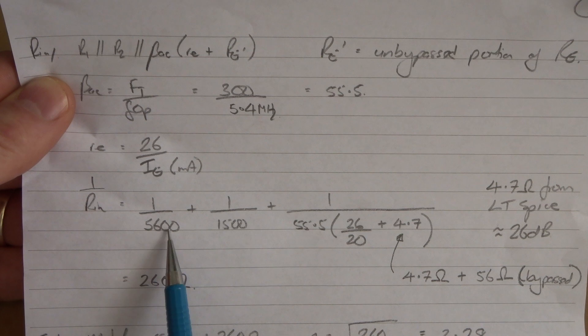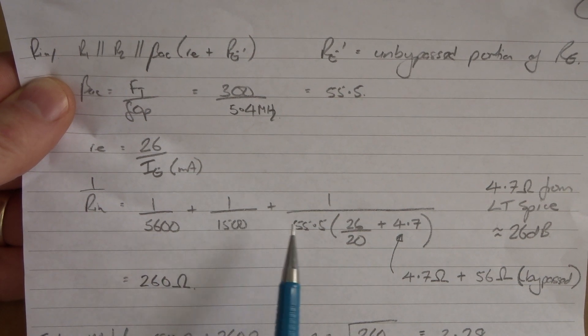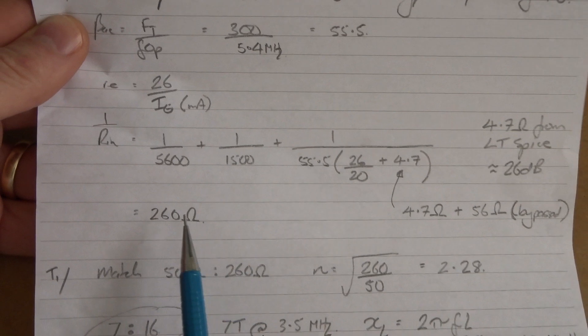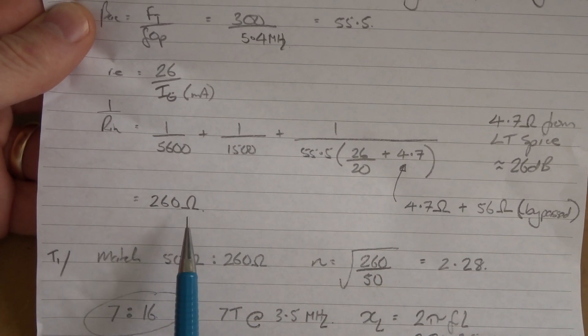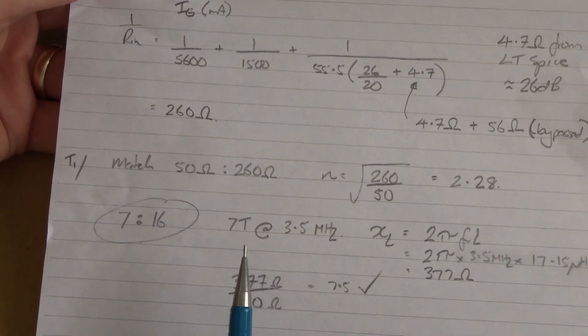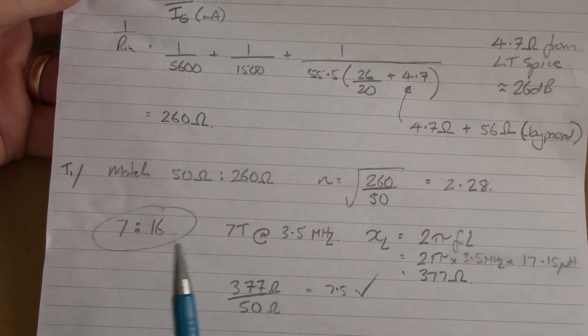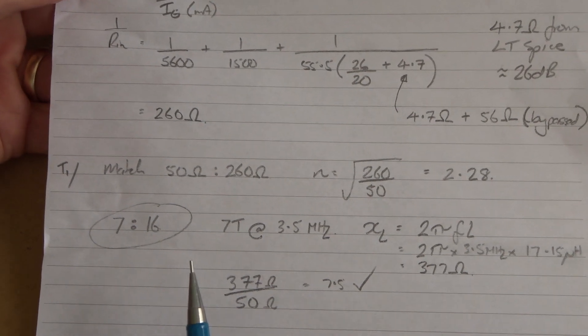Plugging that together and inserting our values of R1 and R2, our beta AC, little RE, we come out at 260 ohms. Now we've got that, we can work out what the transformers need to be for both the input and the output to meet our requirements.